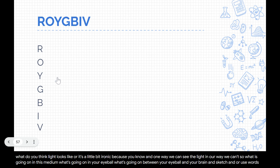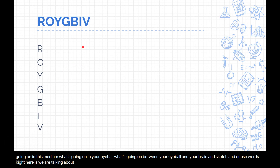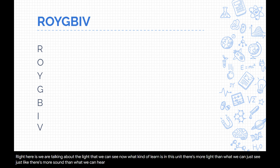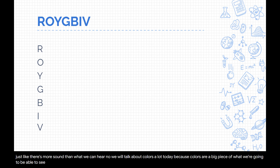Moving on. One thing we're talking about here is the light that we can see. We'll learn in this unit there's more light than what we can just see — just like there's more sound than what we can hear. We'll talk about colors a lot today because they're a big piece of what we're going to be able to see. We're thinking about the colors of a rainbow, putting them in order.